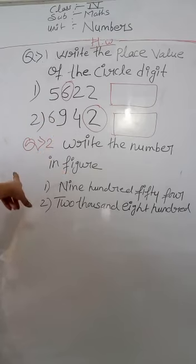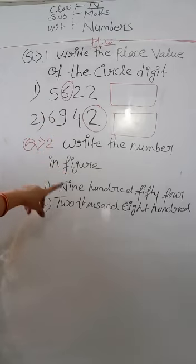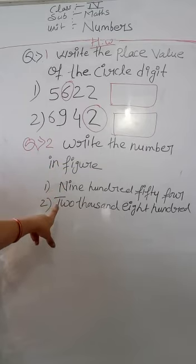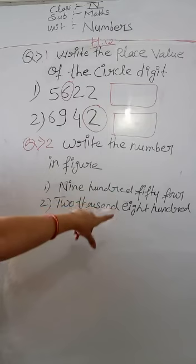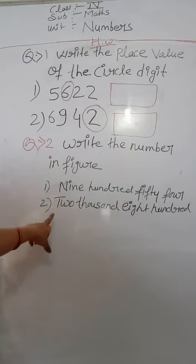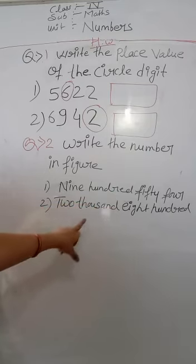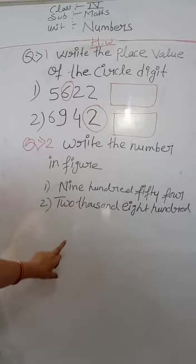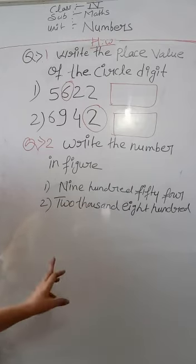The second question is: write the number in figures. You have to write these numbers as figures. First is nine hundred and fifty-four — 954. And the second is two thousand eight hundred — 2800. Clear? That is your homework.